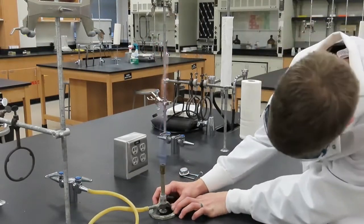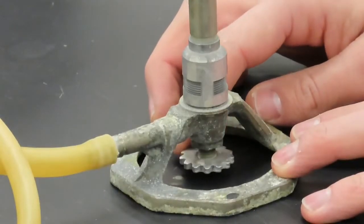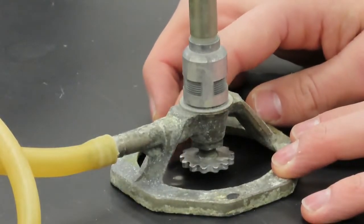After the burner is lit, you can reduce the height of the flame by turning the gas valve in the direction to close it.